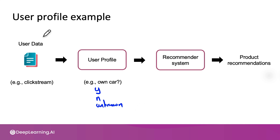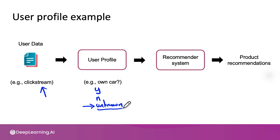Now, if something about the clickstream data changes — maybe the input distribution changes — then maybe over time, if we lose our ability to figure out if a user owns a car, the percentage of the unknown tag may go up. And because the user profile's output changes, the input to the recommender system now changes, which might affect the quality of the product recommendations.